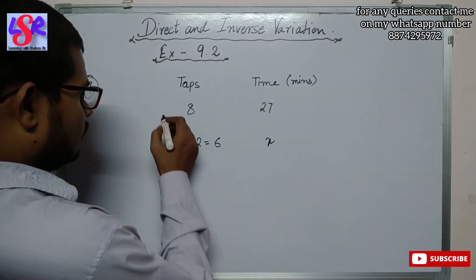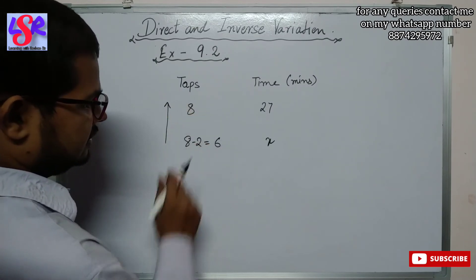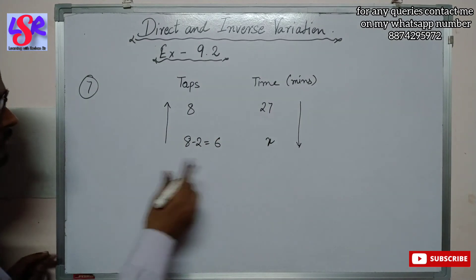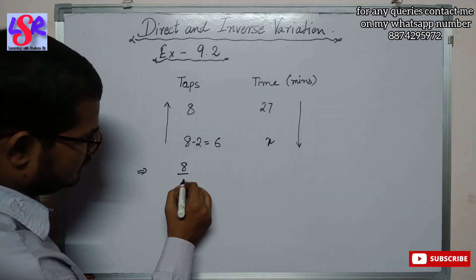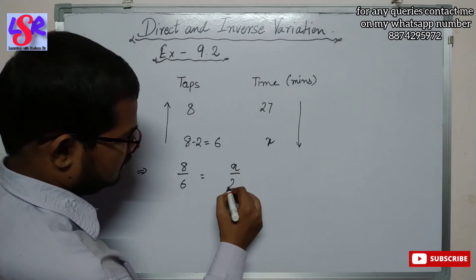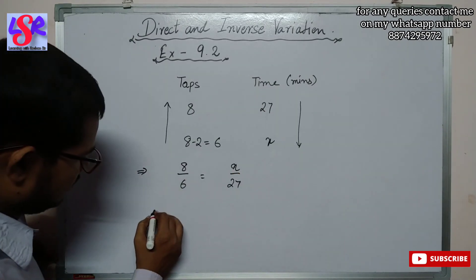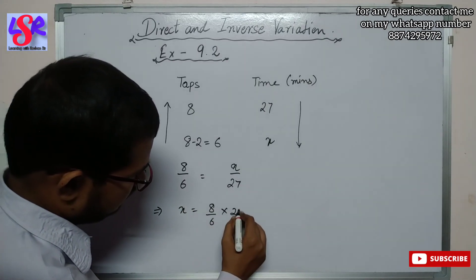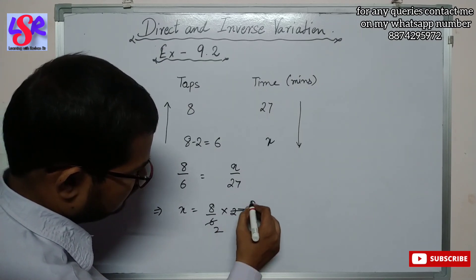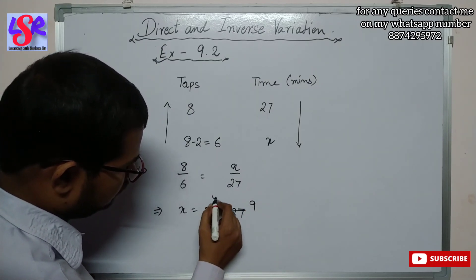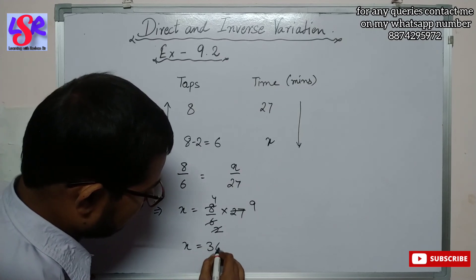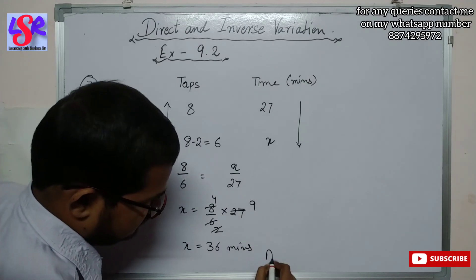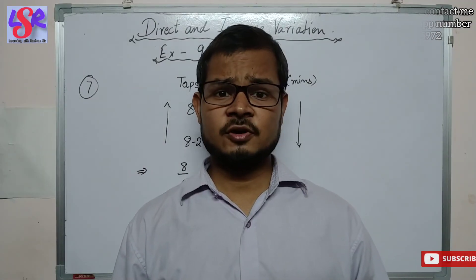We put the arrow in this direction as 8 is greater than 6, and then in the opposite direction. The equation becomes 8 upon 6 equals x upon 27. On cross multiplication, x equals 8 upon 6 into 27. Simplifying, x equals 36 minutes. That is all for this video, thank you.